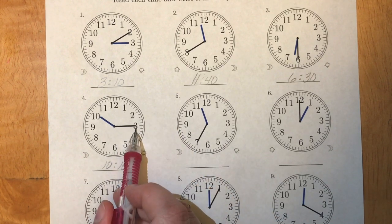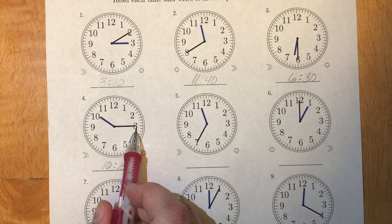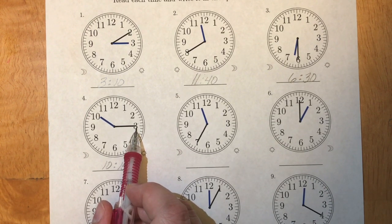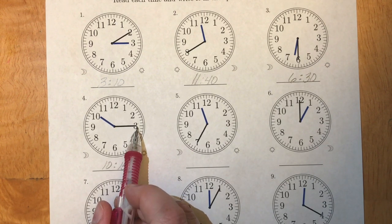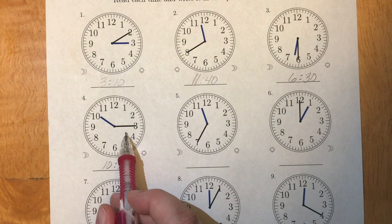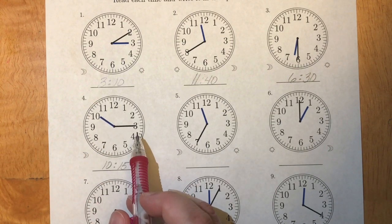Now this also has another special name. When we're on the three in terms of our minutes, we call this a quarter after the hour. So on this one at ten, fifteen, it's a quarter after ten o'clock or a quarter past ten o'clock.